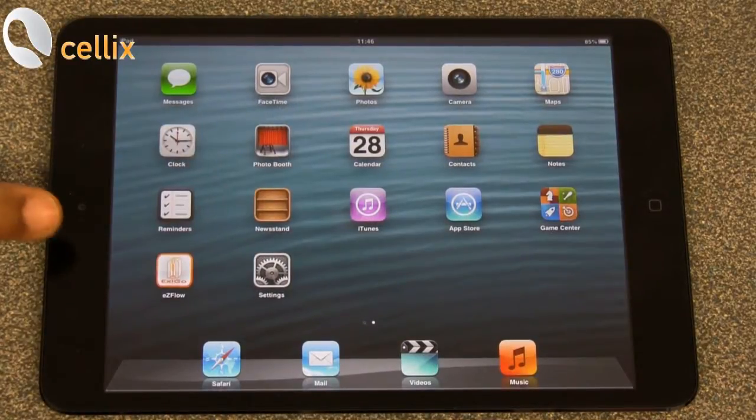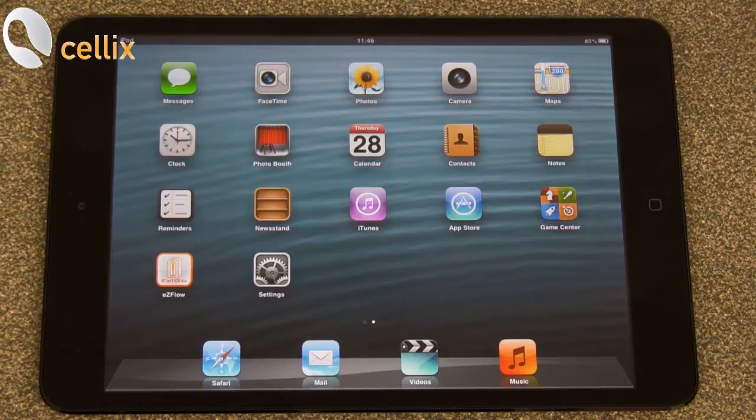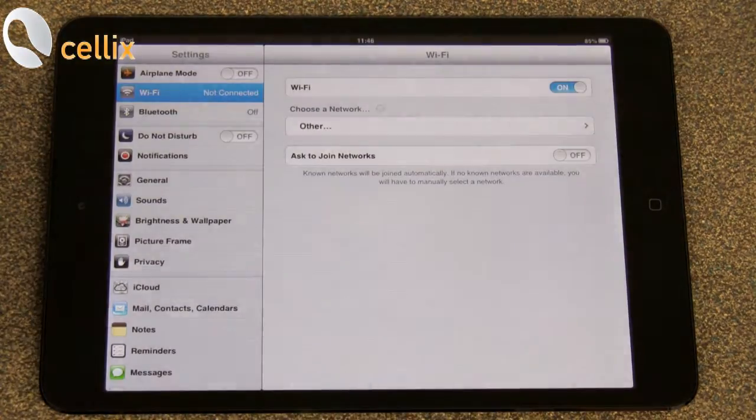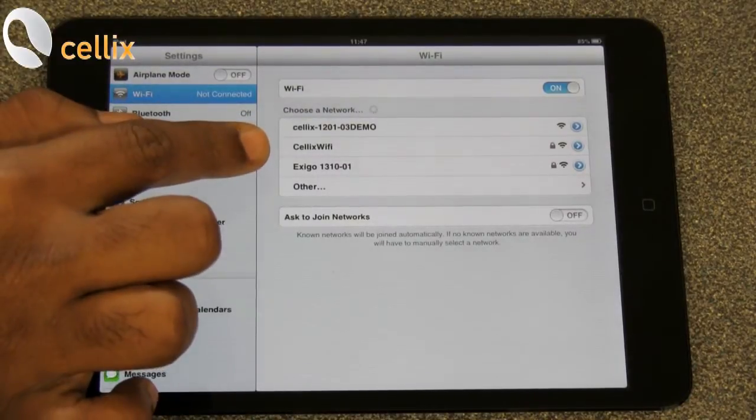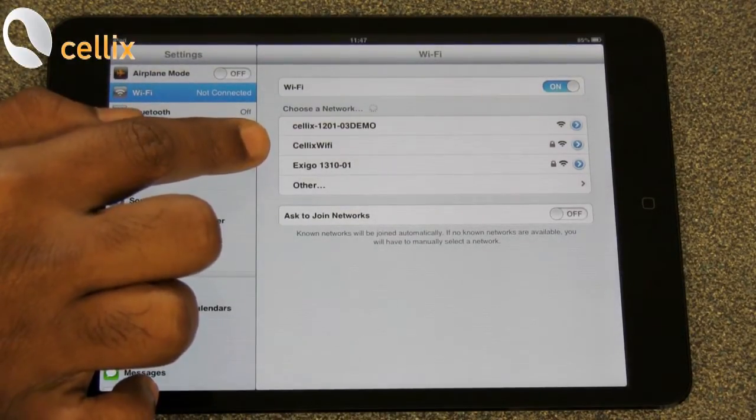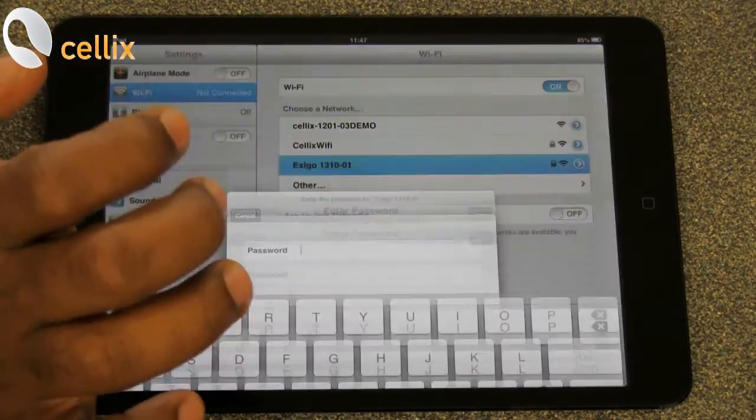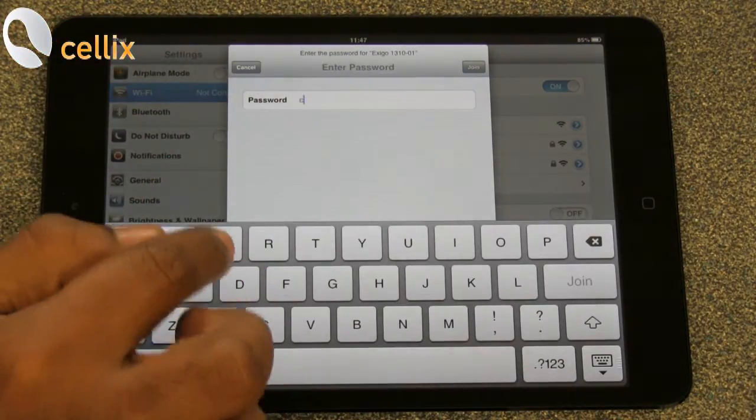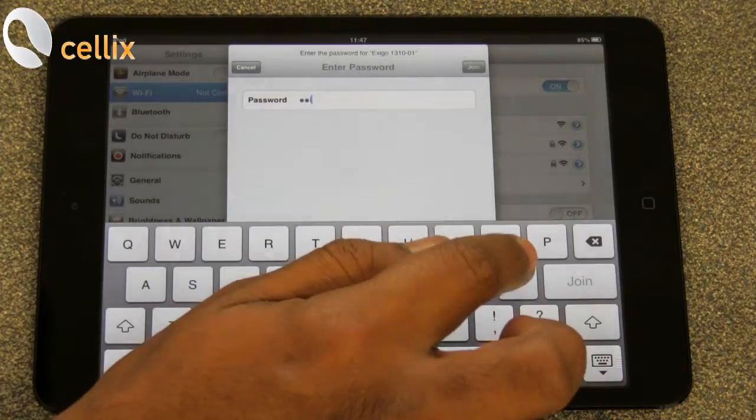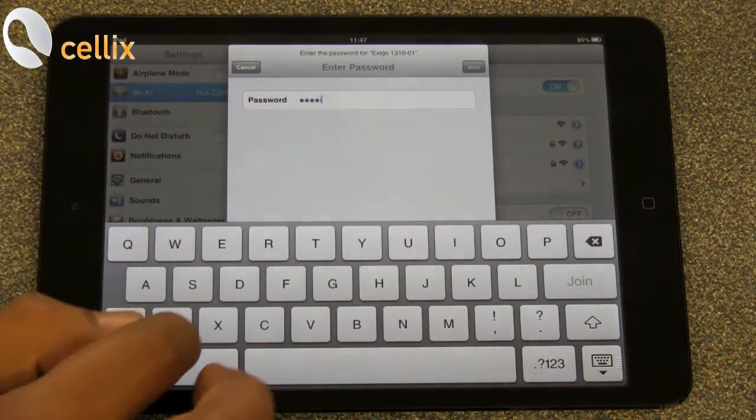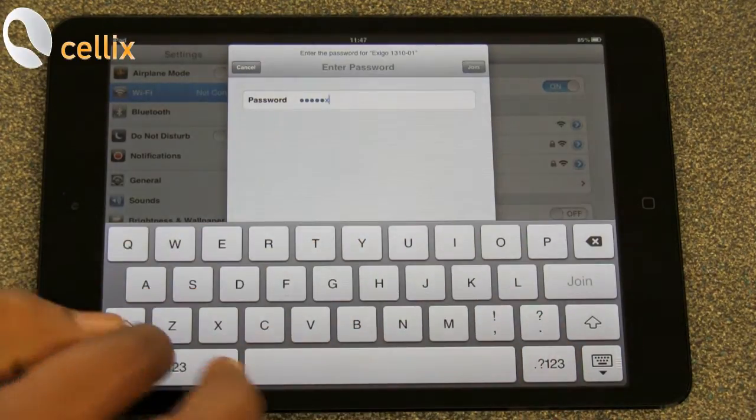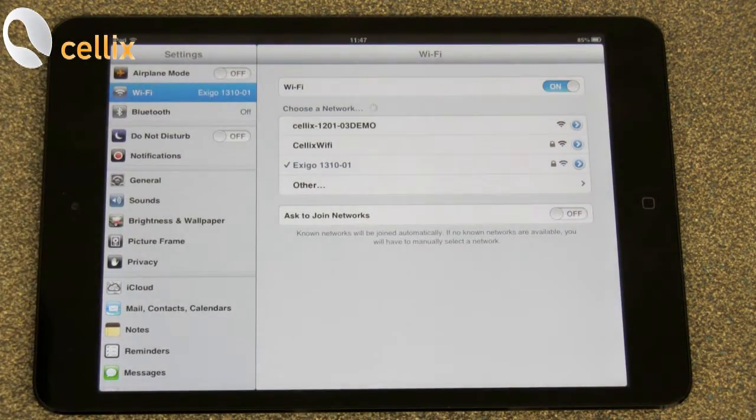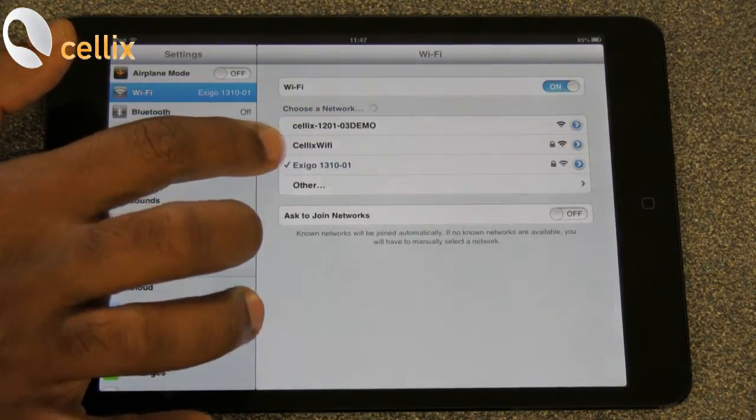Next is to connect the iPad to the pump. For that, you go to settings. You can see the Exigo 1310. You click and you ask for the password that is cellix13, C-E-L-L-I-X-13, and click join. So now it is connected to the pump.